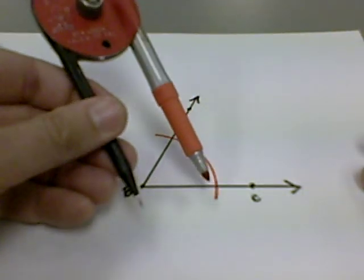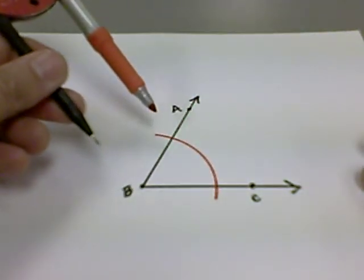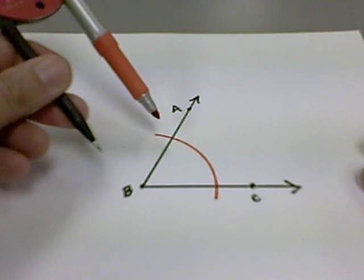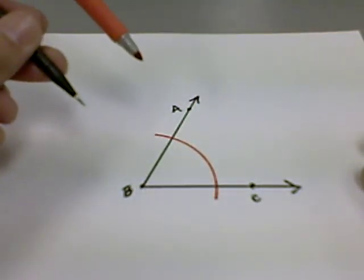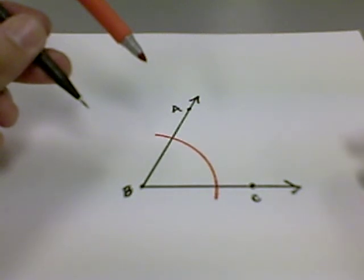Now, you can choose to make one continuous arc, as I've done here, or you can choose to make one small arc on each leg, just showing where the arc would pass through each side.